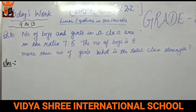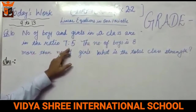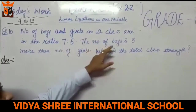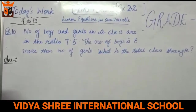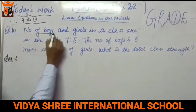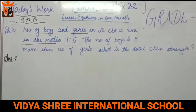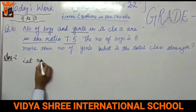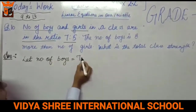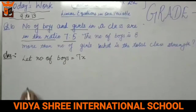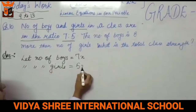This is question number 10. The number of boys and girls in a class are in the ratio 7:5. The number of boys is 8 more than the number of girls. What is the total class strength? Here we have boys and girls; their ratio is given as 7:5. So let number of boys be 7x and let number of girls be 5x.